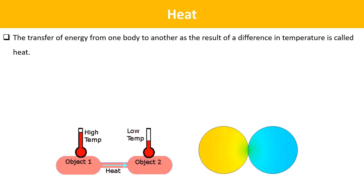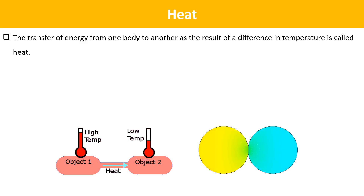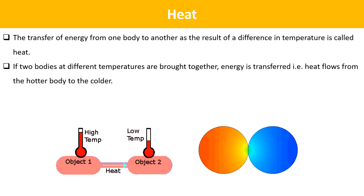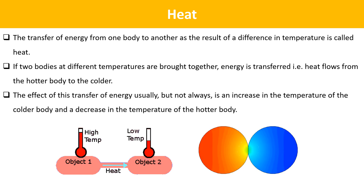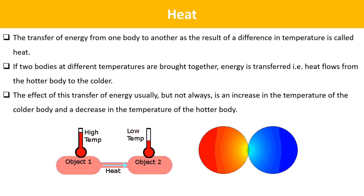The next term is Heat. The transfer of energy from one body to another as the result of a difference in temperature is called heat. If two bodies at different temperatures are brought together, energy is transferred — heat flows from the hotter body to the colder. The effect of this transfer of energy usually, but not always, is an increase in the temperature of the colder body and a decrease in the temperature of the hotter body.